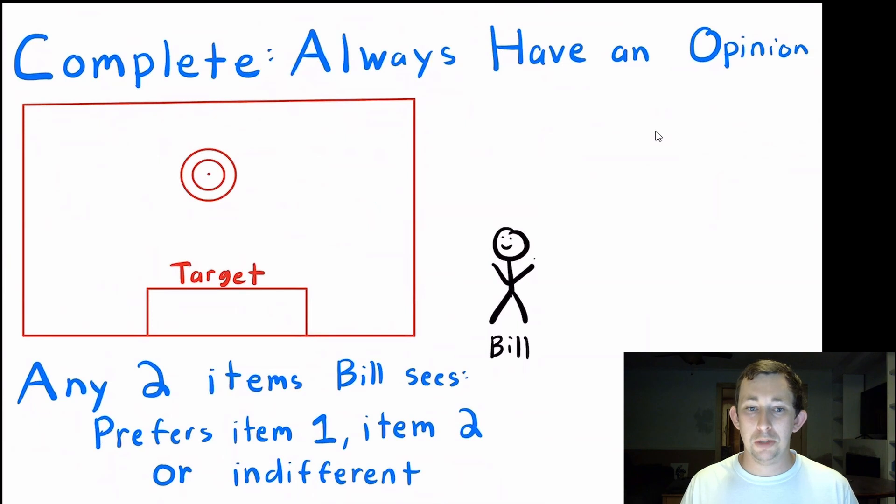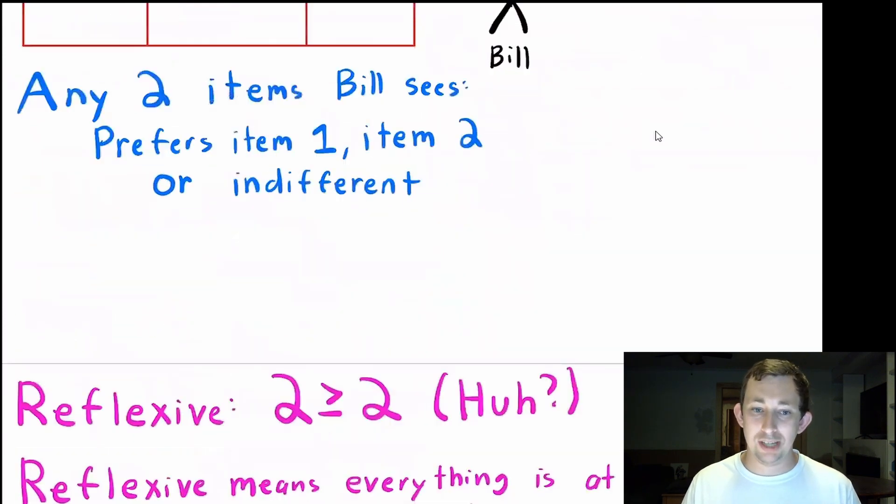There are no two items that Bill looks at and says, I don't have an opinion. He does have an opinion. It could be that he's indifferent between the two, but he definitely has an opinion between any two objects that you show him. So complete, pretty simple, you always have an opinion.